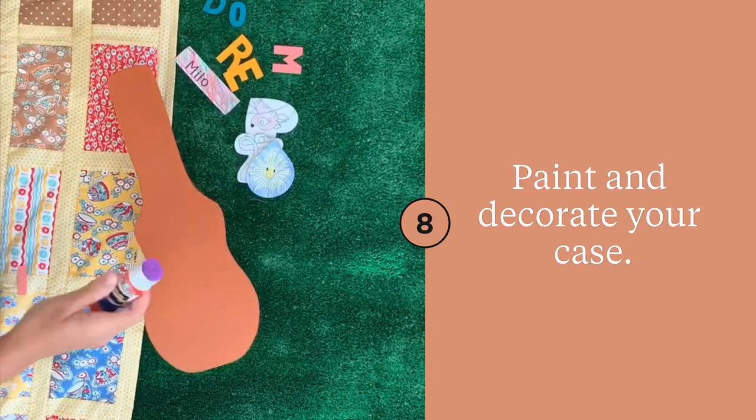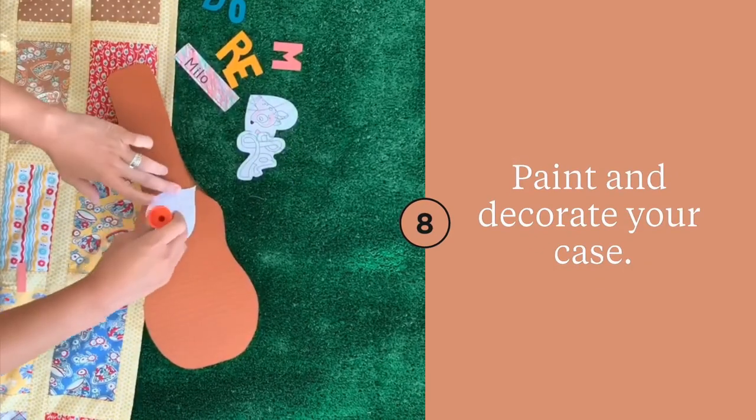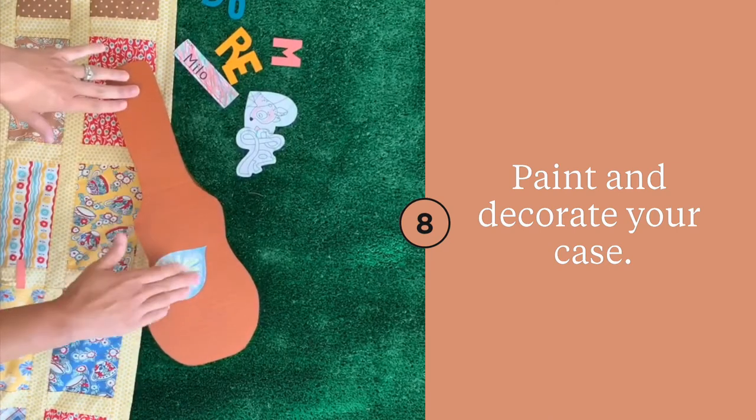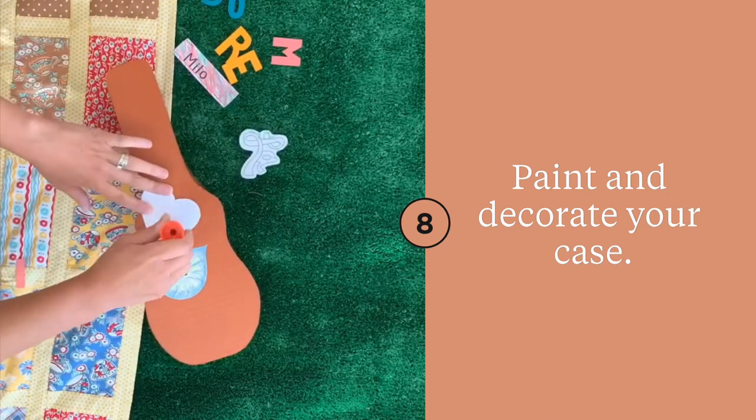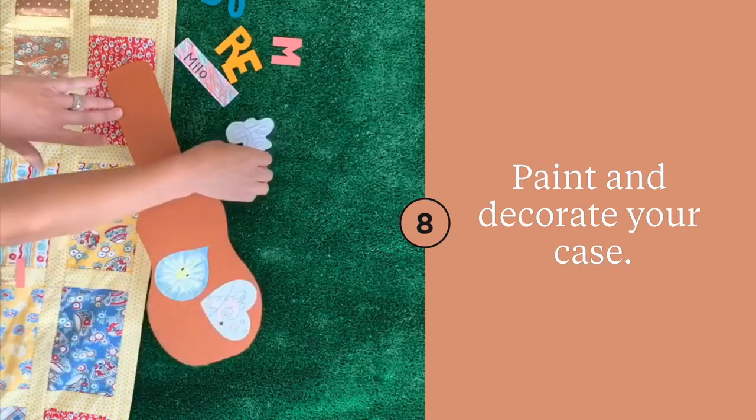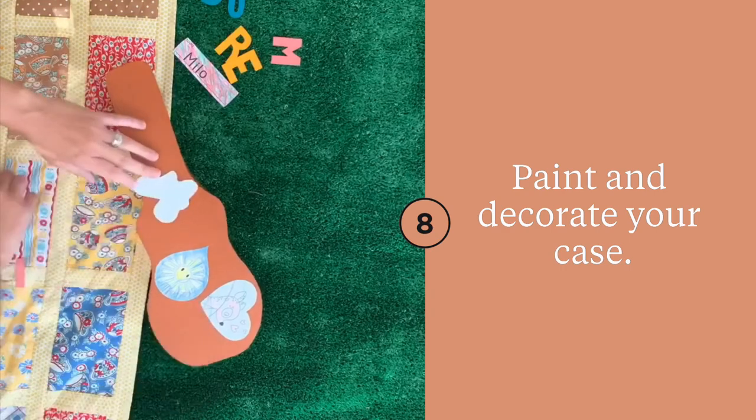Now it's on to the fun part of decorating your case. For the base color of each of our cases, I used spray paint. It was just a good coverage over all of the words on the case and a little bit less messy and quicker to dry. But you could use acrylic paint really easily as well.